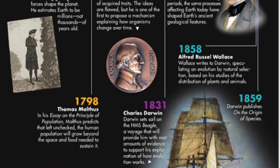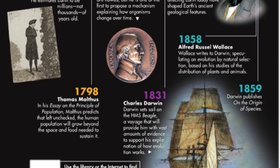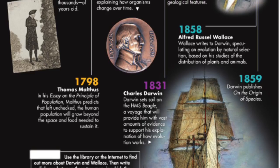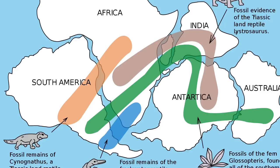1858 — Alfred Russel Wallace wrote to Darwin, speculating on evolution by natural selection based on his studies of the distribution of plants and animals. In 1859, Darwin published On the Origin of Species.